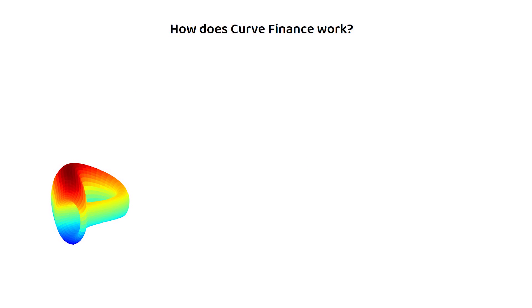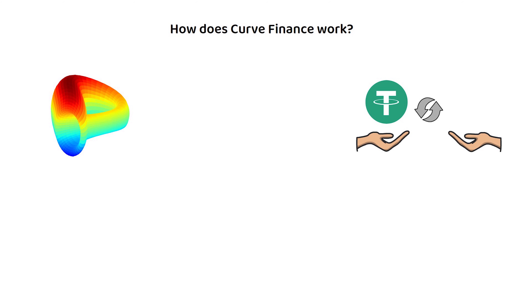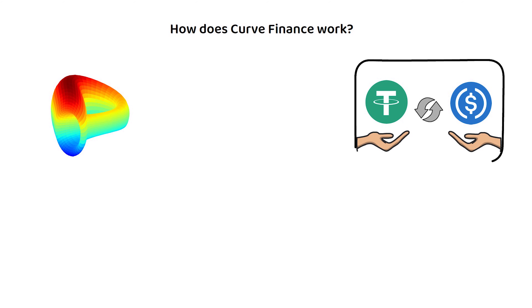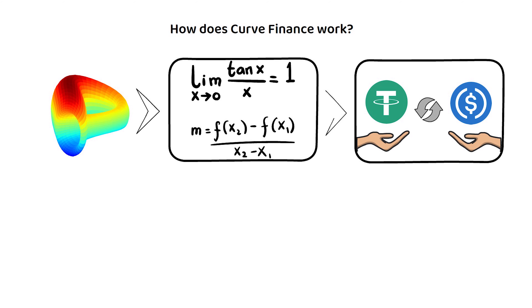But how does Curve Finance work exactly? In short, Curve Finance is a trading platform whose purpose is to allow users to trade stablecoins for the best possible prices. To achieve this, it uses various mathematical algorithms to ensure the best possible price between its assets is achieved. This is known as its bonding curve.